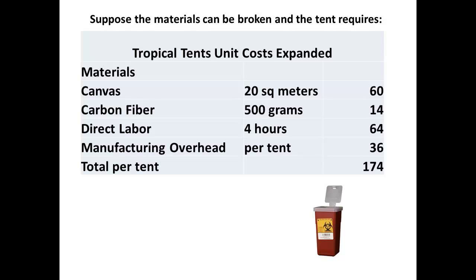These costs can be broken down and expressed in another way, and this is one of the steps that may be taken to develop standard costs. Note that materials are now broken down to the canvas used and the carbon fibre used, and the cost is expressed together with the standard quantity that would be required to produce each tent. The direct labour is expressed not just in dollar value, but also in terms of hours. The total will still be $174 per tent.